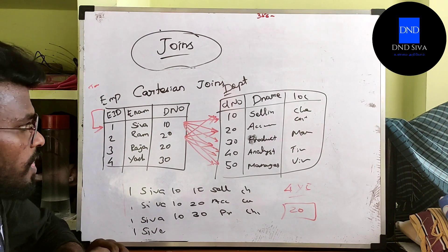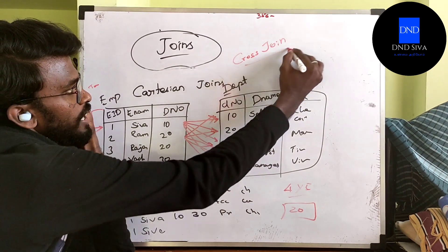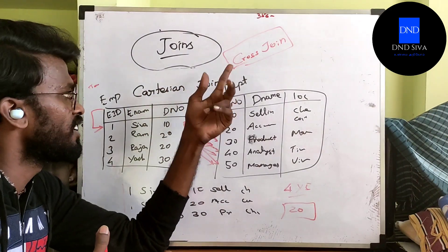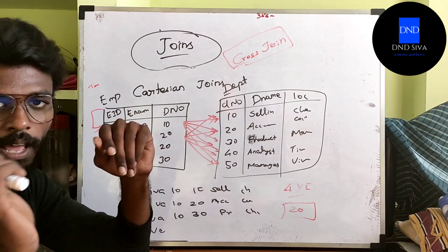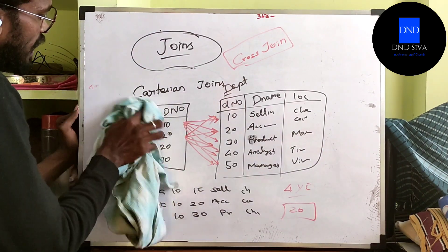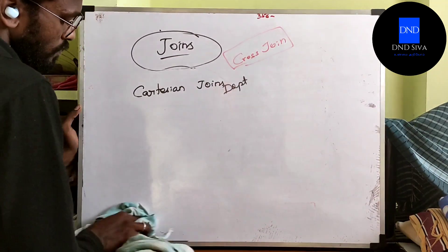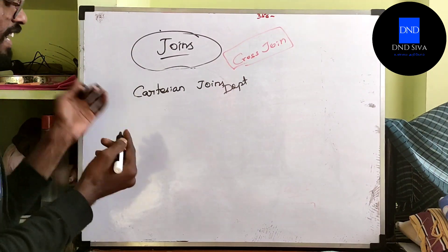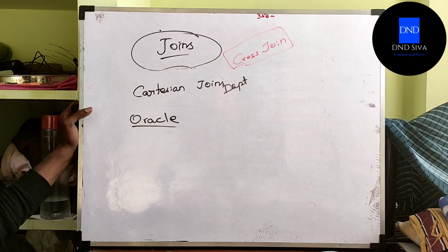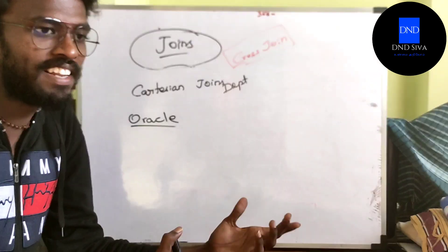Ok friends, the name is Cartesian join. We are going to talk about Cartesian join. Let's go to the laptop. You can look at the syntax. The syntax is Oracle — that is the software in which we will see the syntax.